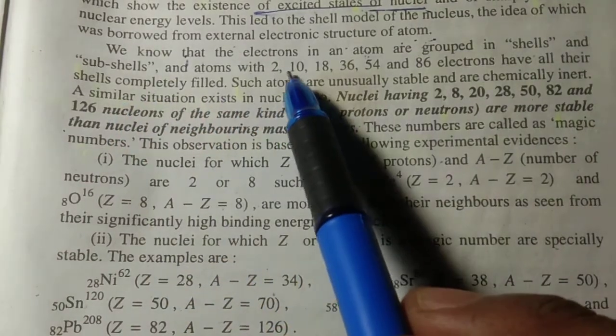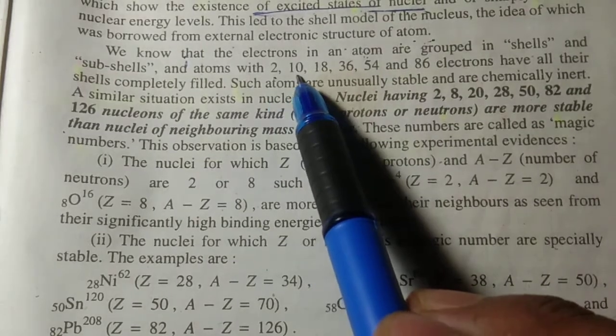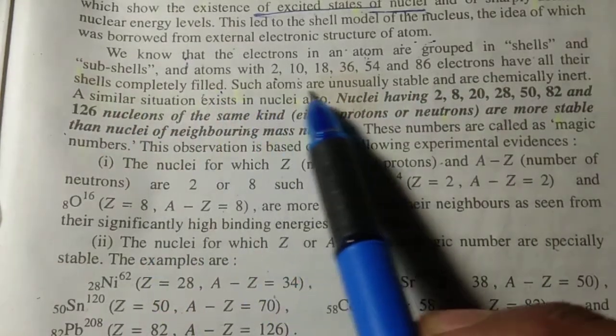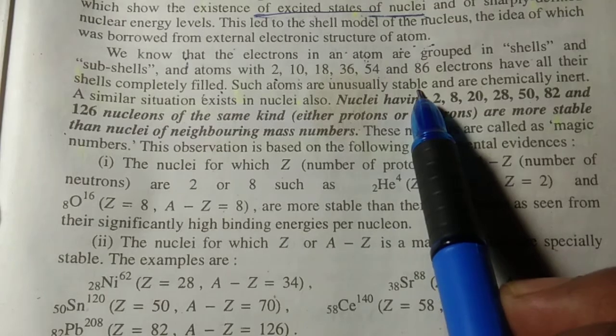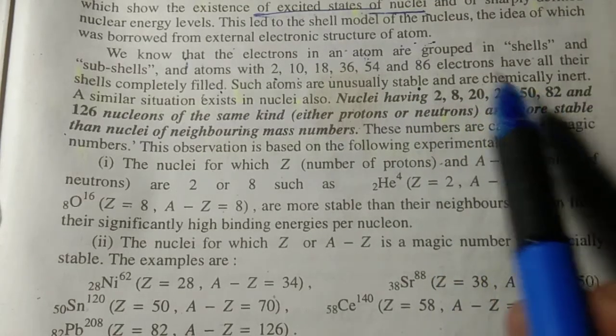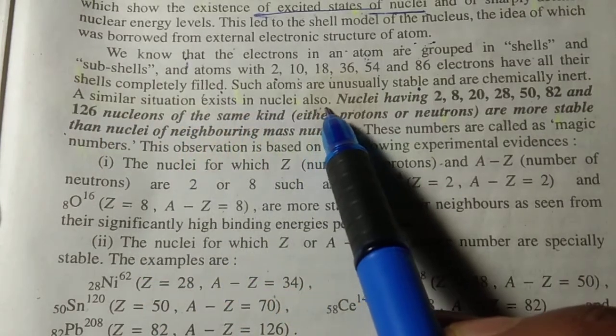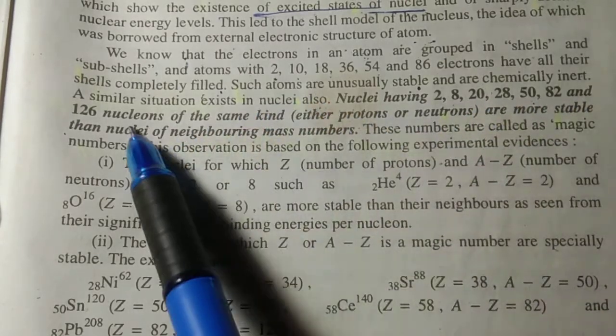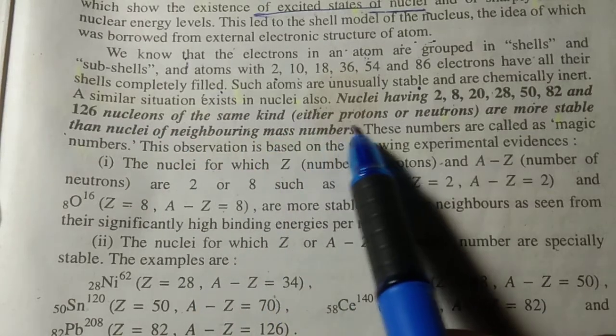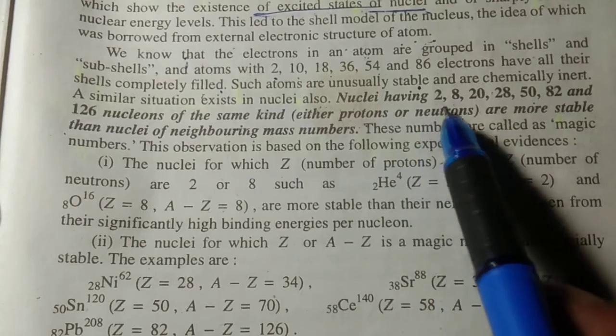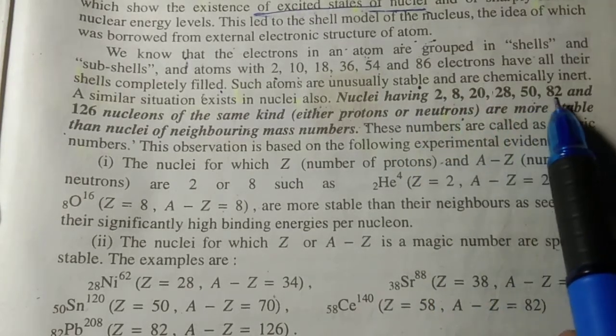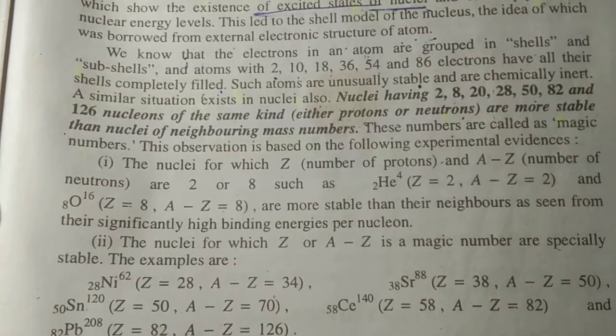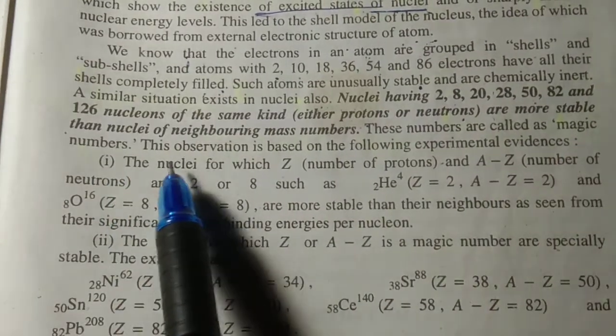A similar situation exists in nuclei also. Some nuclei having 2, 8, 20, 28, 50, 82, and 126 nucleons of the same kind, either protons or neutrons, are more stable than nuclei of neighboring mass numbers. These numbers are called magic numbers.